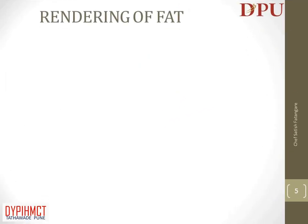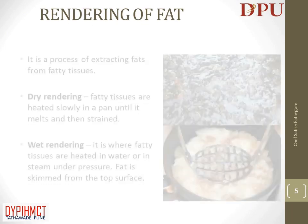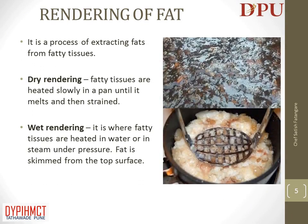In this slide we will discuss about rendering of fat. It is a process of extracting fats from fatty tissues. Dry rendering: fatty tissues are heated slowly in a pan until they melt and then strained. Wet rendering: fatty tissues are heated in water or steam under pressure, and fat is skimmed from the top surface.